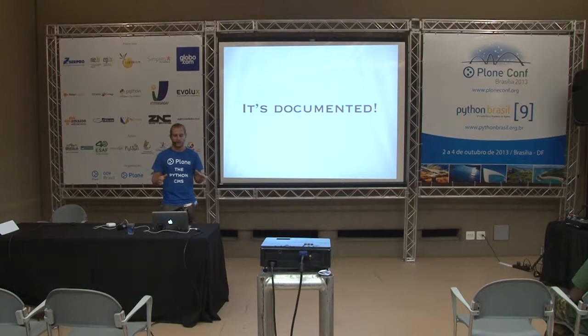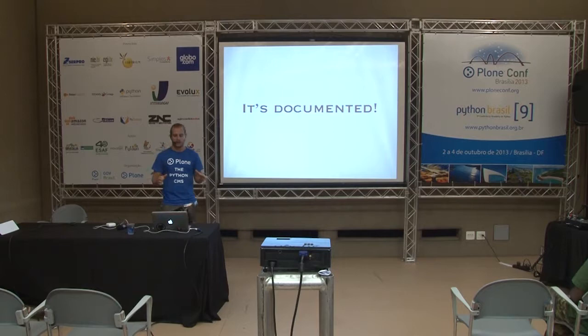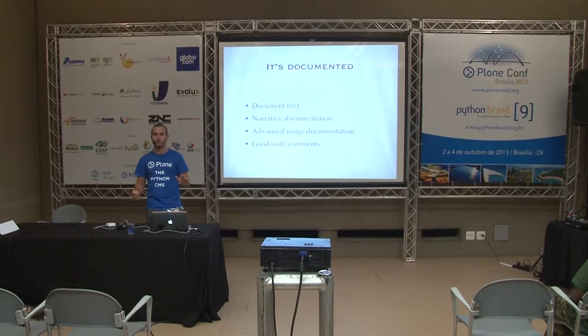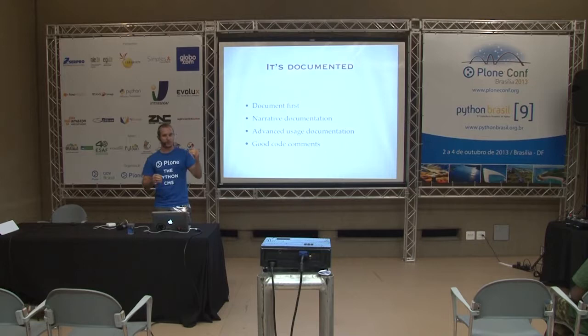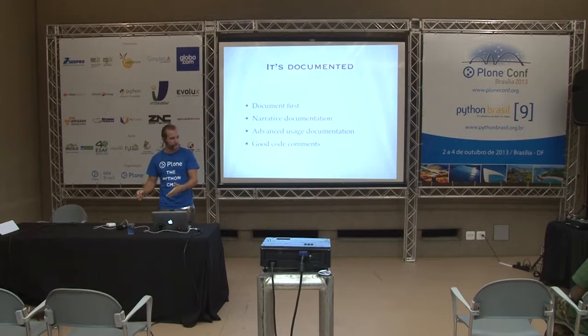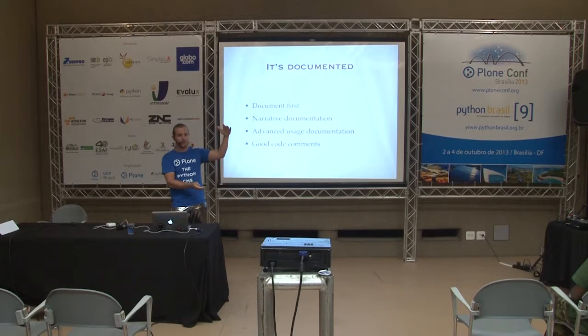The huge thing about Plone API is it's documented — we start with documentation first. After the initial push in Munich, we had the documentation written but no code was written. The narrative documentation of how you would use Plone API was defined and written, with no code done. That enabled us to change the API and how the methods would look very fast because there was no code already that you'd have to throw away. Documentation first was a great idea. When we came to Belgium a few months later, the documentation was also the specs — so it was just coding, really fast.